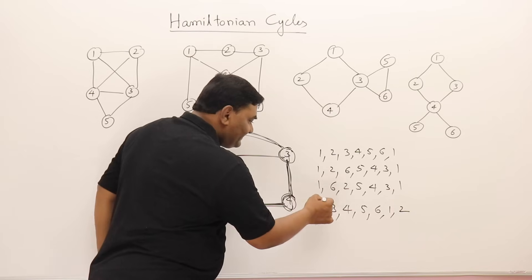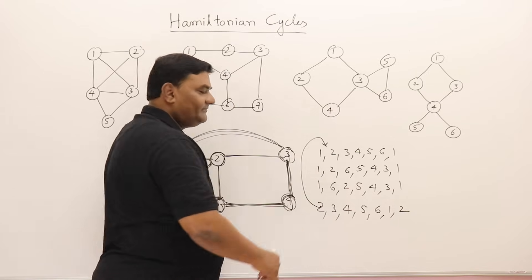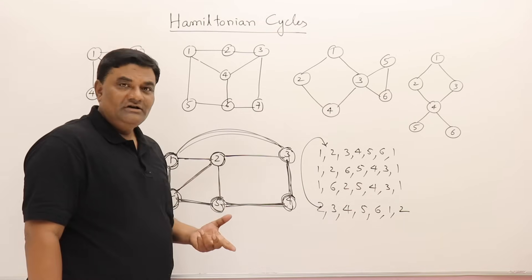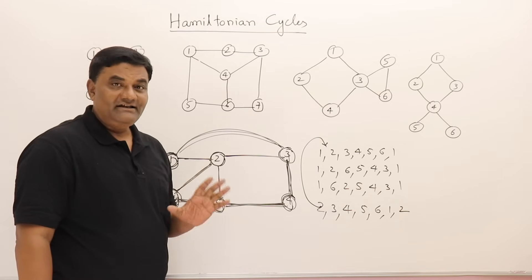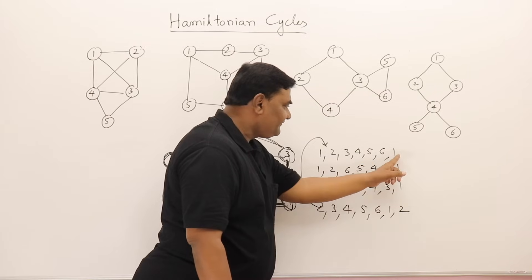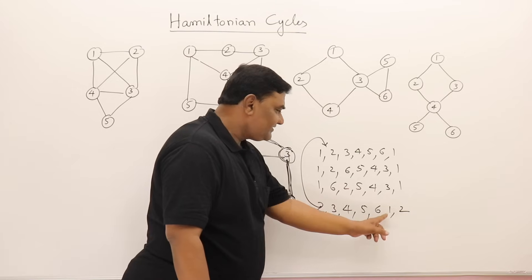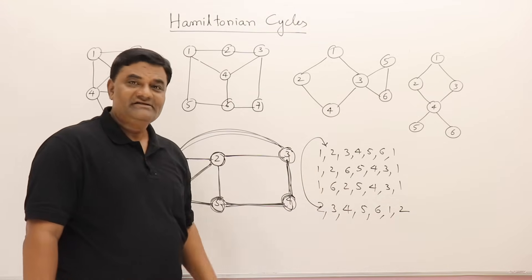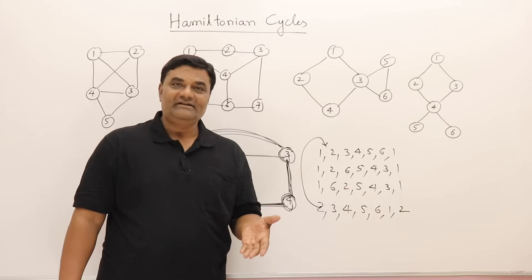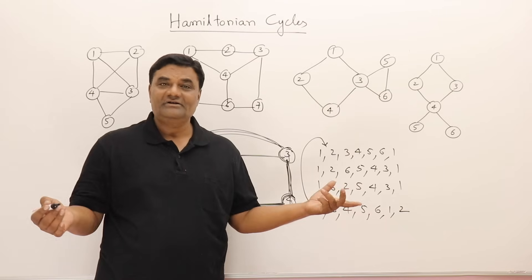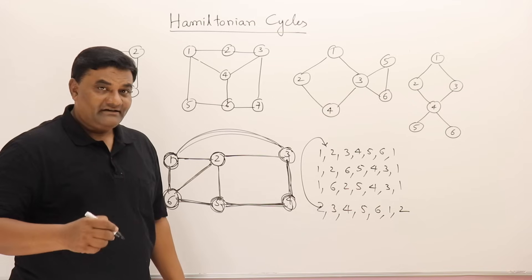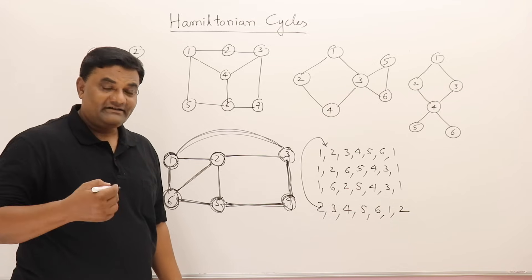Note that if you change the starting point the cycle has not changed. If the order of vertices is 2→3→4→5→6→1→2, that is the same as 1→2→3→4→5→6→1 — just starting from a different vertex. So you have to take care that you are not counting duplicate cycles, i.e., not taking the same cycle again with a different starting point.